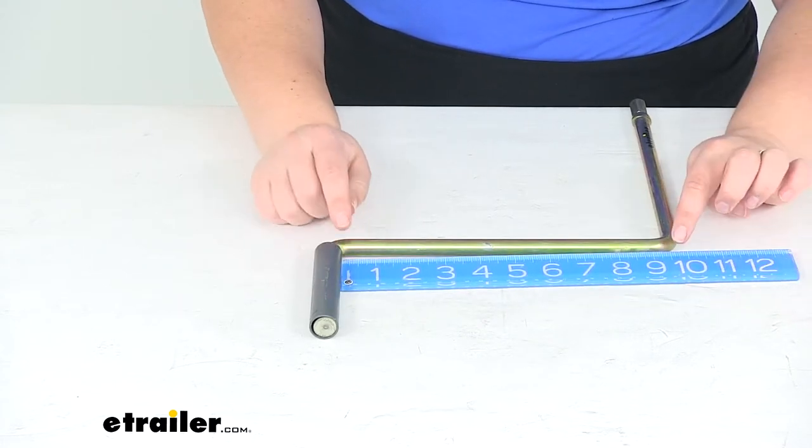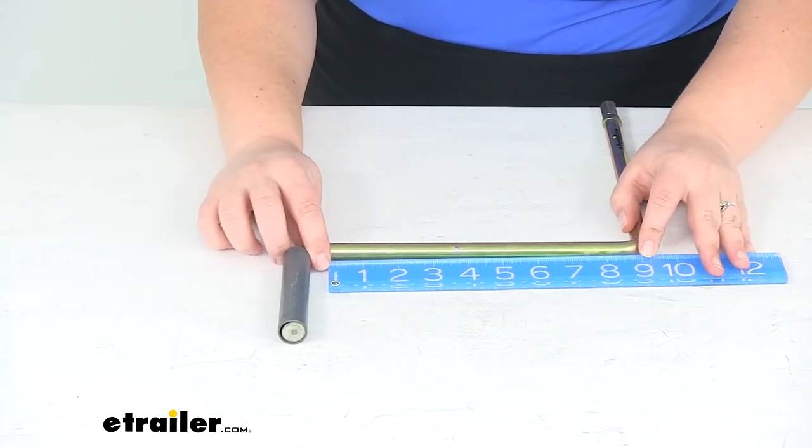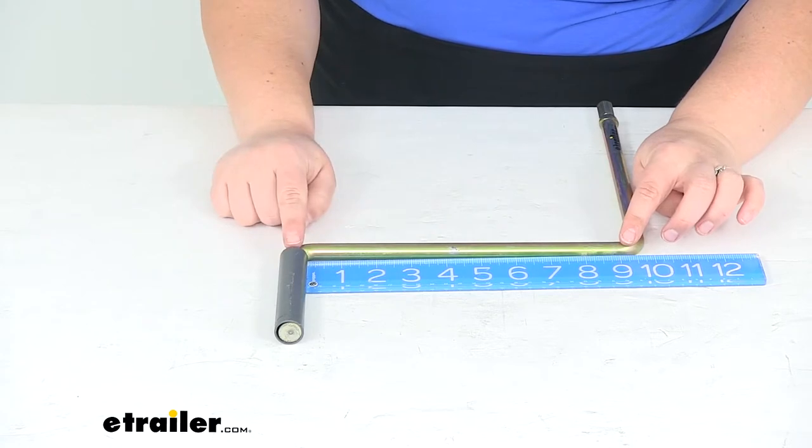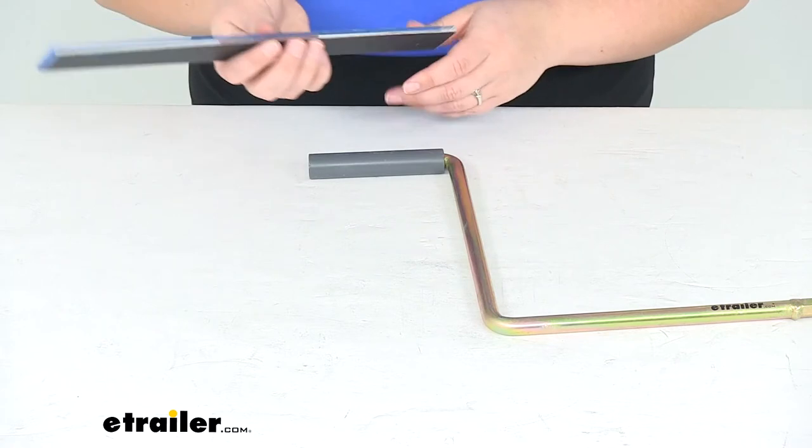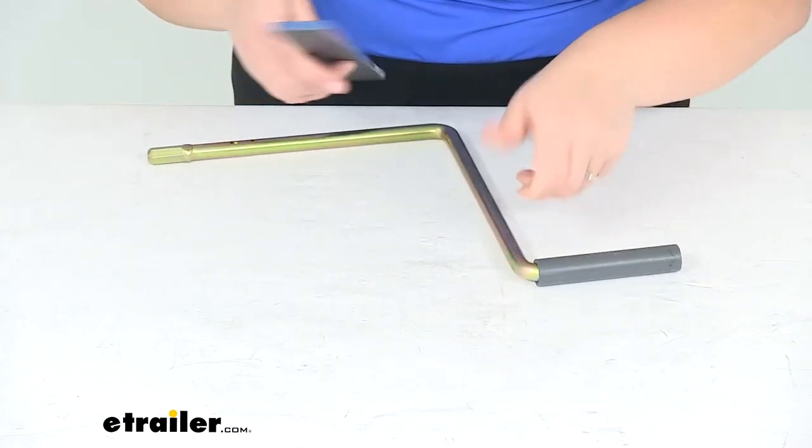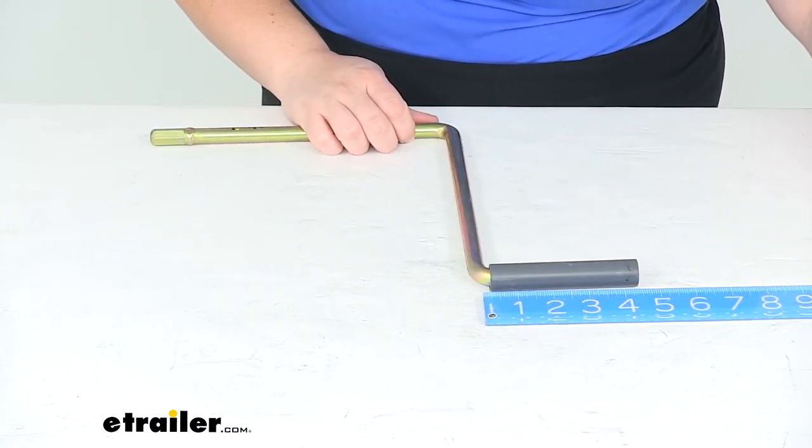And then we'll have about 9 and a half inches going up to our handle. So it creates a nice, big space there. And then our handle is about 4 and a half inches long.